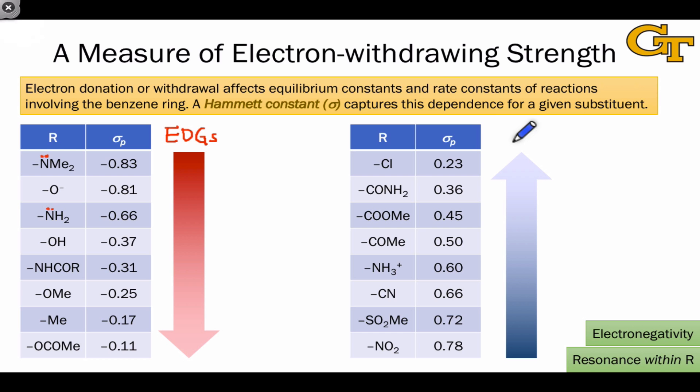Here's a survey of some electron-withdrawing groups, with the most strongly electron-withdrawing at the bottom and the least strongly-withdrawing at the top. We can notice even here that as the electronegativity of the atom connected to the aromatic ring increases, in general, the value of sigma p increases. The electron-withdrawing power goes up. The halogens are an exception to that idea only because they're donating by resonance, which compensates for their inductive-withdrawing effect.